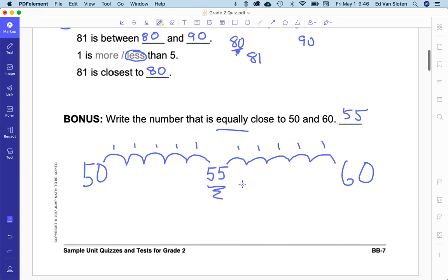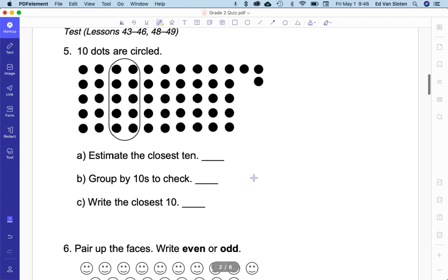I hope that is clear. You can always ask questions in the comments. Circling dots. 10 dots are circled. Estimate the closest 10. Well, 10, 20, 30, 40, 50. I say it's 50. Now, if I group them by tens. I'm actually going to count: 1, 2, 3, 4, 5. So, 50 was good - it's 53. Group by 10s to check. Yep.